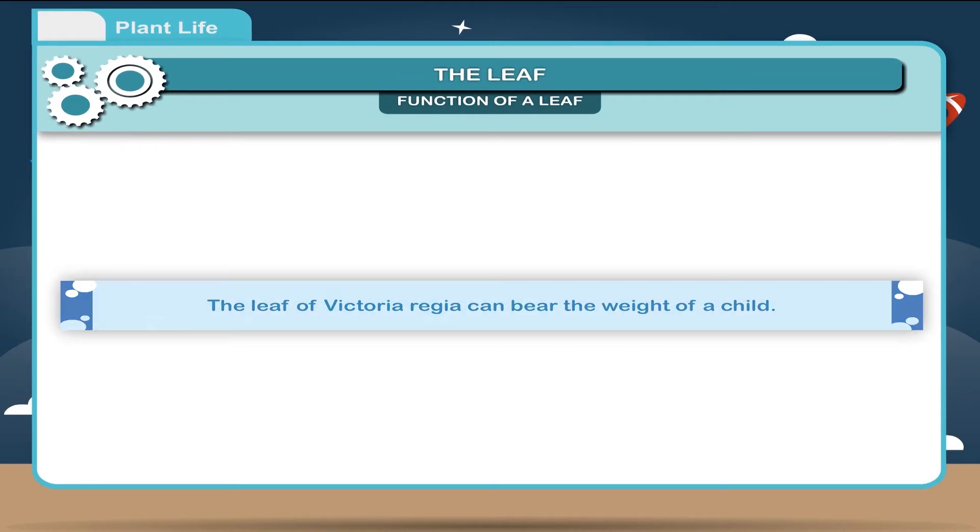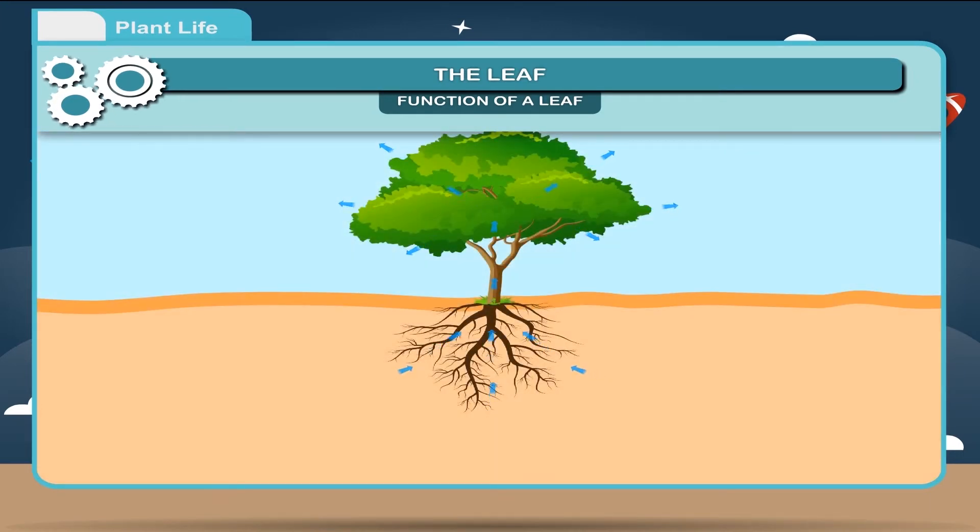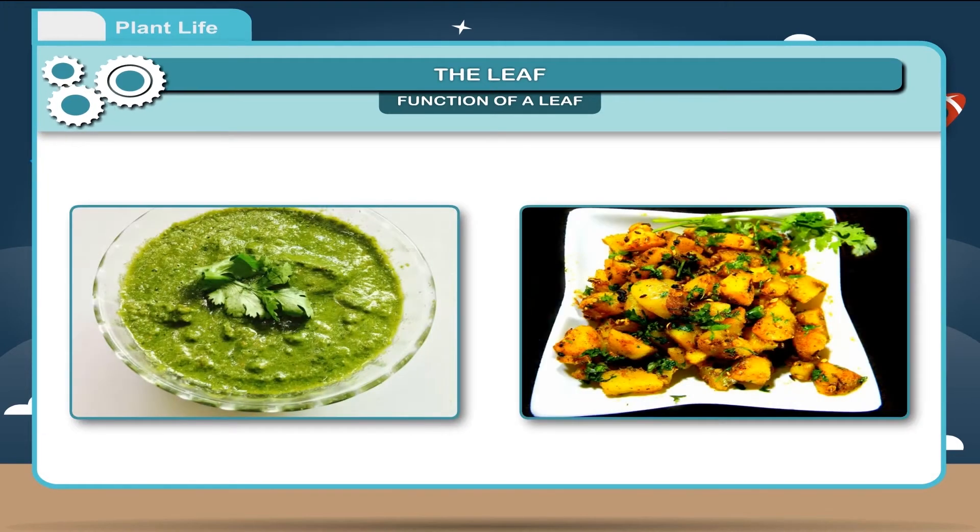Function of a leaf. The excess water in the form of water vapour is removed from the leaves through stomata and the process is called transpiration.